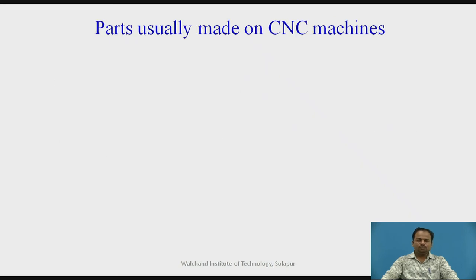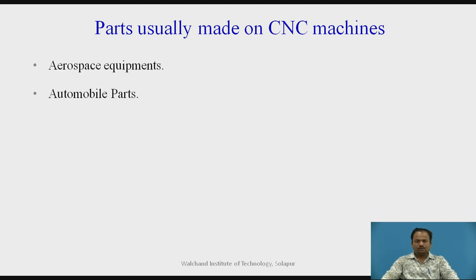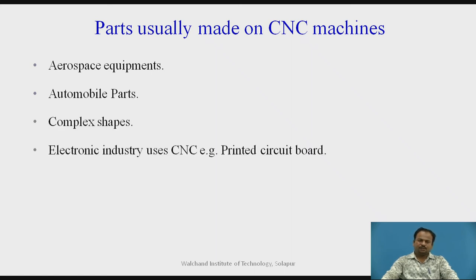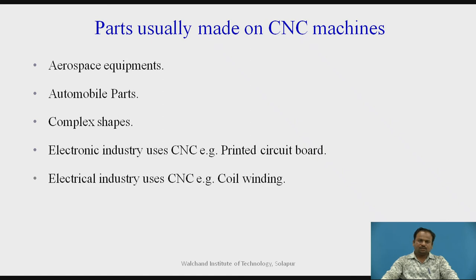Parts made on CNC machines include aerospace equipment, automobile parts, and complex shapes. The electronic industry uses CNC for printing circuit boards, and the electrical industry uses CNC for making windings of coils.